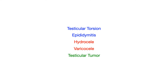Obviously, any question that involves testicular pathology, chances are your five answer choices are going to be what you see on this slide. But in the question vignette, you have to look for certain buzzwords to differentiate between what you see in blue and what you see in red — that's really nitty gritty. Testicular tumor is kind of its own unique thing, and that's why it's in green.